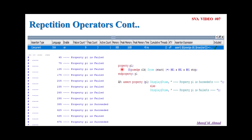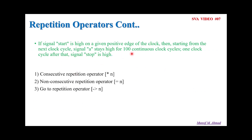For this particular assertion, if you see the console result — because we are writing our own custom message and action block — we'll find the assertion pass and fail messages. Whenever the assertion is failing, we'll find the failed message; whenever the assertion is passing, we'll find the pass message. In the assertion tab, you'll find nine failures and a pass count of three. You'll also find the time when the assertion is failing. If you compare this console result, you will clearly understand at what time the assertion is passing and at what time it is failing.